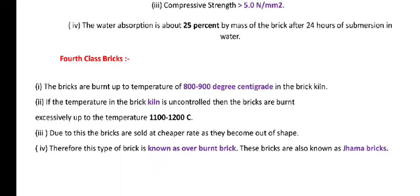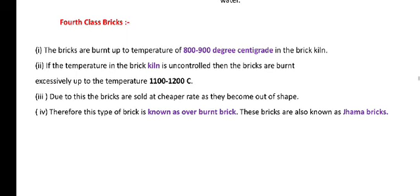Fourth class brick: the bricks are burnt up to a temperature of 800 to 900 degree centigrade in the brick kiln. If the temperature in the brick kiln is uncontrolled, then the bricks are burnt excessively up to a temperature of 1100 to 1200 degree Celsius. Due to this, the bricks are sold at a cheaper rate as they become out of shape. Therefore, this type of brick is known as over-burnt brick, also known as Jhama bricks.